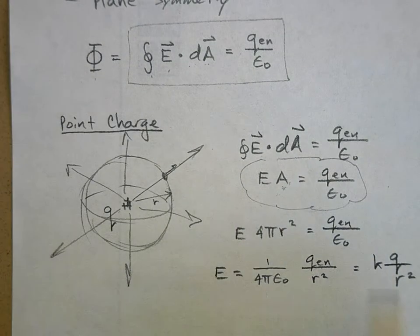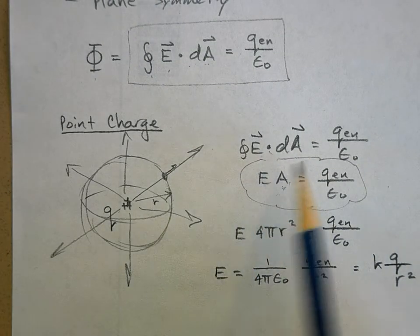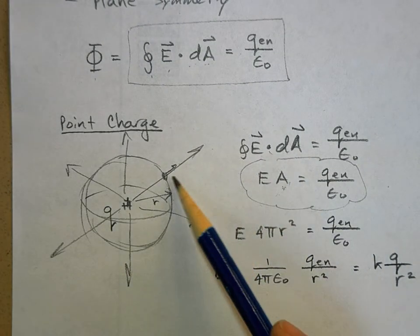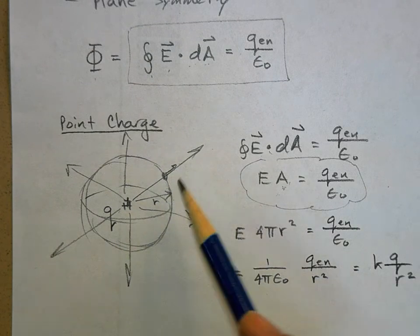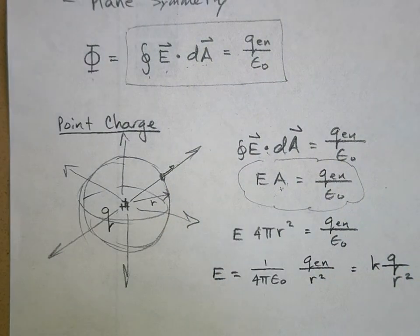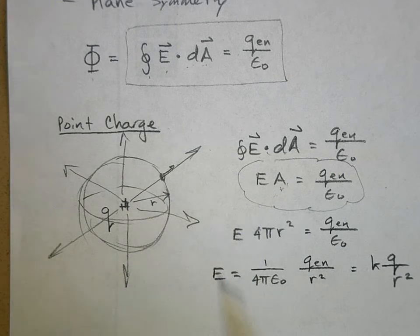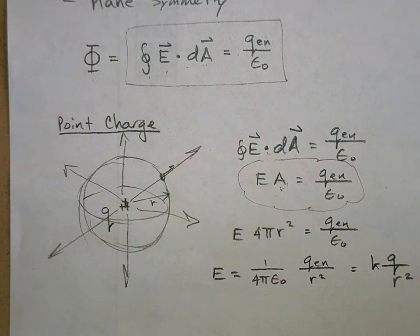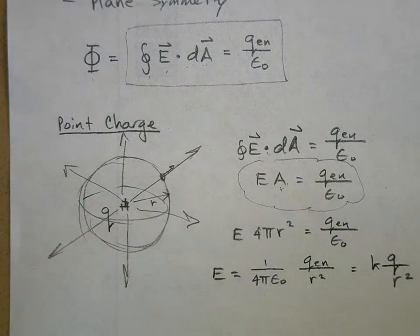We lost the direction when we took the dot product, but by inspection we can see the electric field points outward, so we add that back. Gauss's law gives you the magnitude of the electric field — you already assumed the direction when you chose your Gaussian surface to match the symmetry.